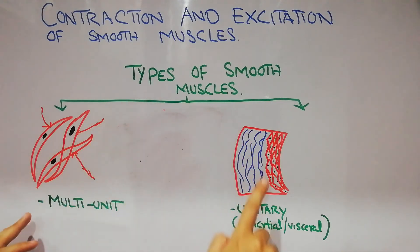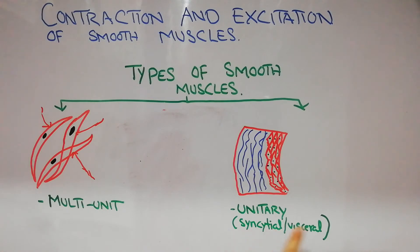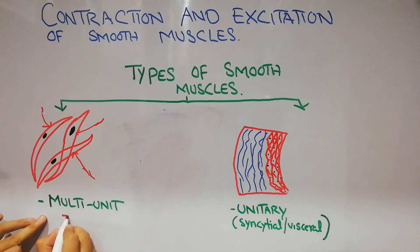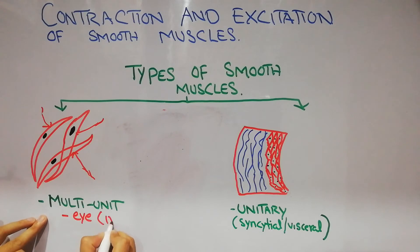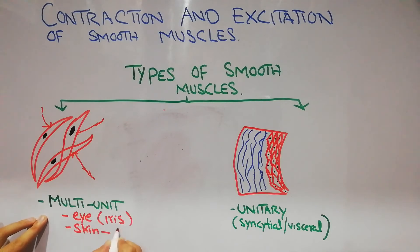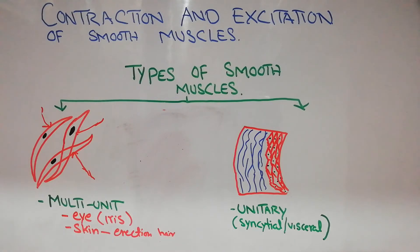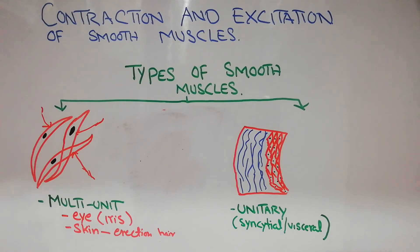Multi-unit smooth muscles are specifically present in the human eye — particularly the iris — and in the skin, where they are responsible for the erection of hair. When you are afraid and your hair gets erected, that is basically with the help of multi-unit smooth muscles. Similarly, the pupil and iris movement is with the help of multi-unit smooth muscles.